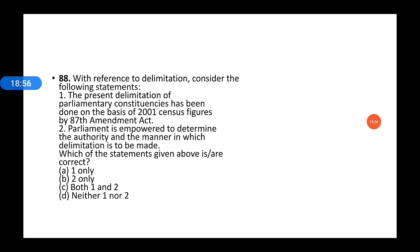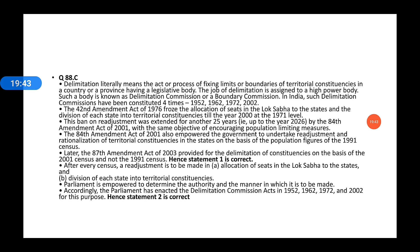The second statement: Parliament is empowered to determine the authority and the manner in which delimitation is to be made. Both statements are correct — the delimitation is based on the 2001 census by the 87th Amendment Act, and Parliament is empowered to determine the authority and manner in which delimitation is to be made. The option is C.